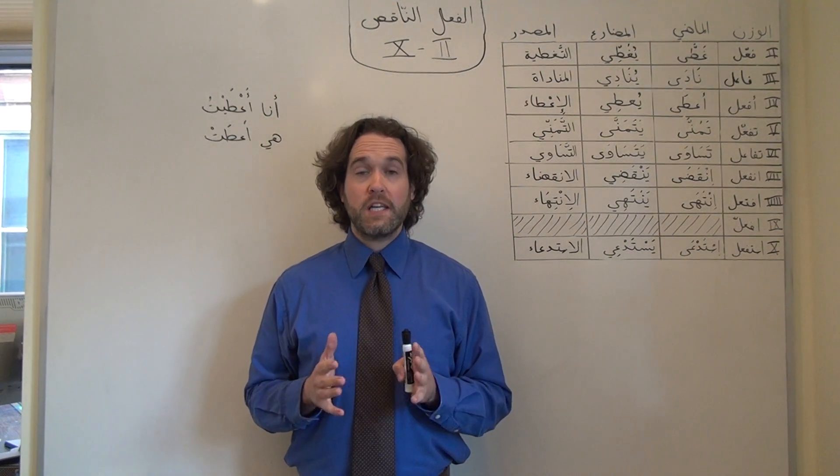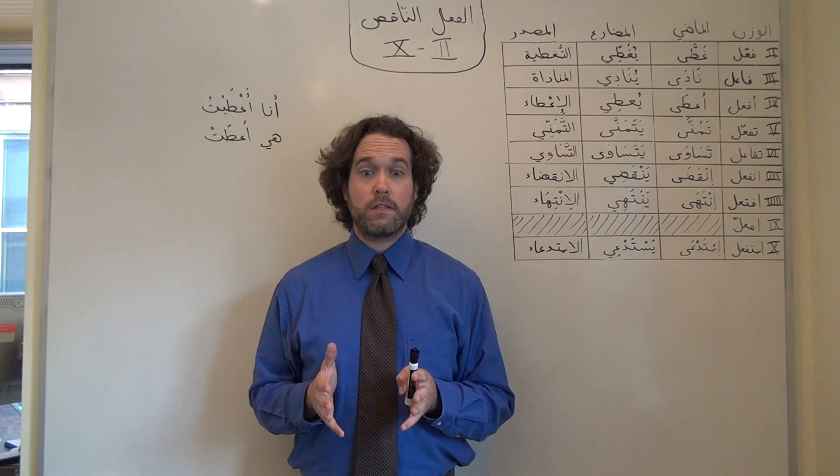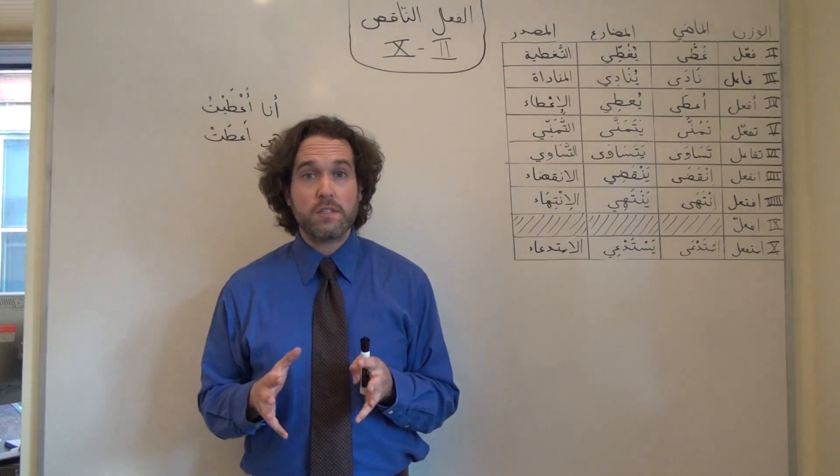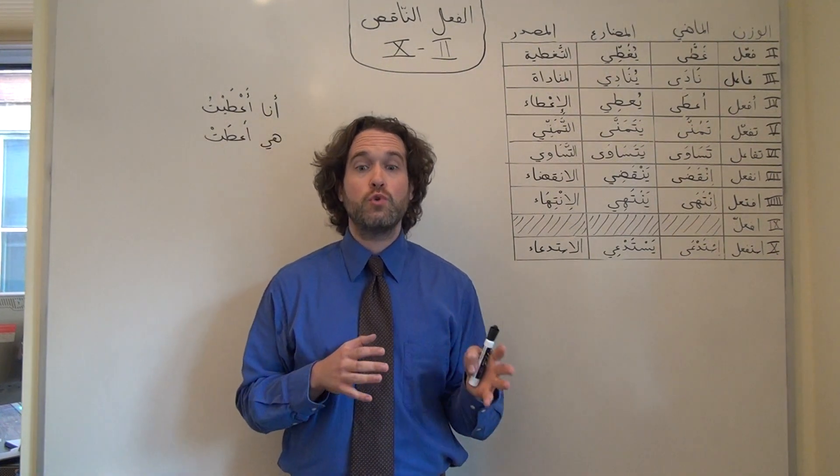مسال خير. Right now I want to keep talking about الفعل الناقص, but this time I want to focus on derived forms two through ten.